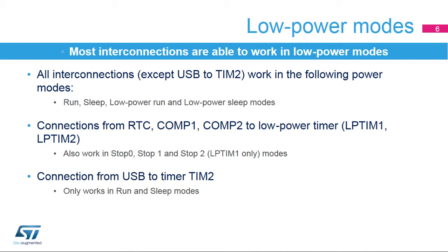Peripherals can be interconnected using the Interconnect Matrix even when the circuit is in a low-power mode. The low-power modes that can be used are run, sleep, and low-power sleep modes, except for the USB to Timer 2 connection, which can only be used in run and sleep modes. The connections from the real-time clock or comparators to low-power timers can also be used in stop-0, stop-1, and stop-2 modes for low-power timer 1.